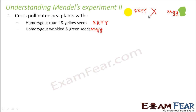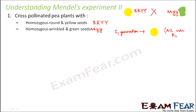When these two parents were crossed, it was observed that in the F1 generation all the seeds produced were yellow and round. As per Mendel's principle of dominance, only one trait dominated — the round shape was dominant and the yellow color was dominant — so all F1 seeds were round and yellow.